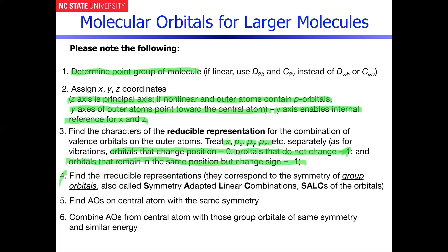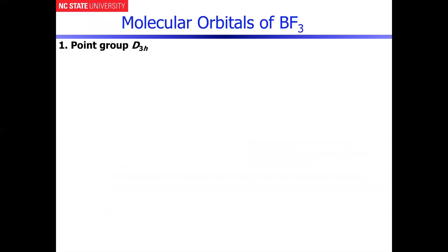Steps four, five, and six are effectively the same procedures we've gone through before, so there are really no major changes necessary for the rest of the approach. In BF3, the point group is D3h. This is analogous to BH3, and because it's analogous to BH3, the 2s group orbitals of fluorine are going to look exactly the same as the 1s group orbitals we constructed previously for the H3 group.